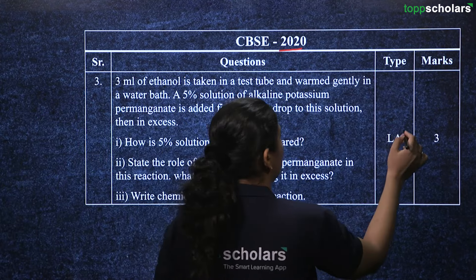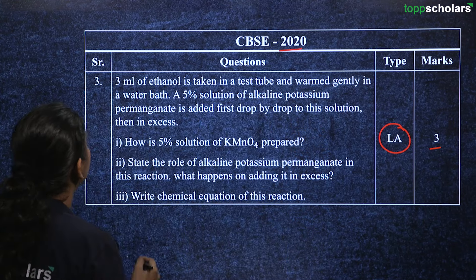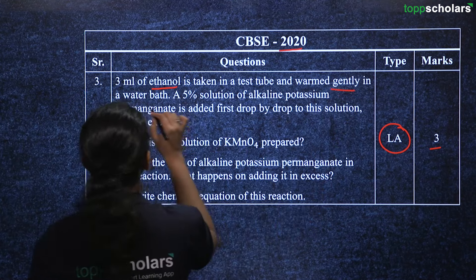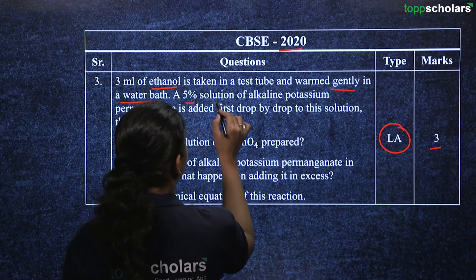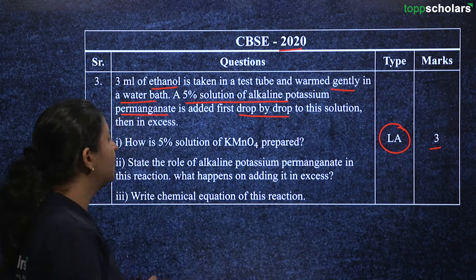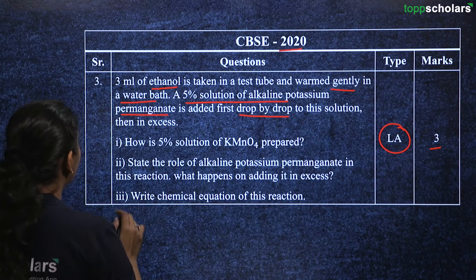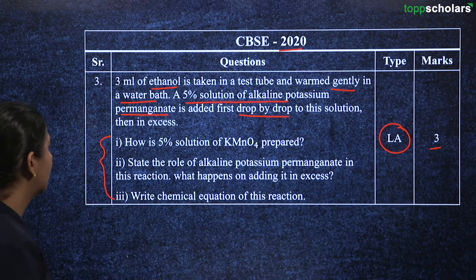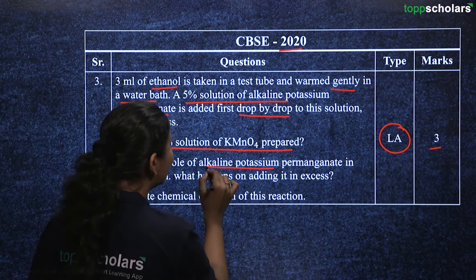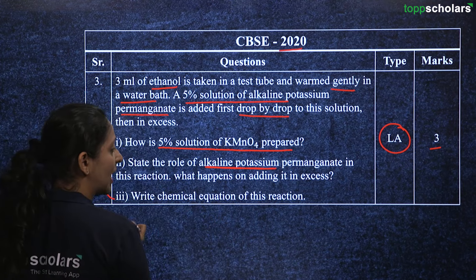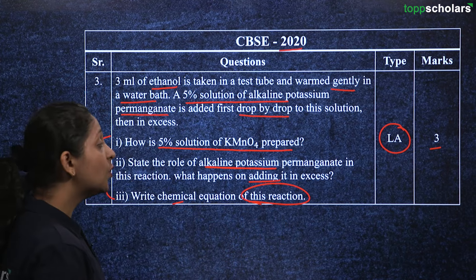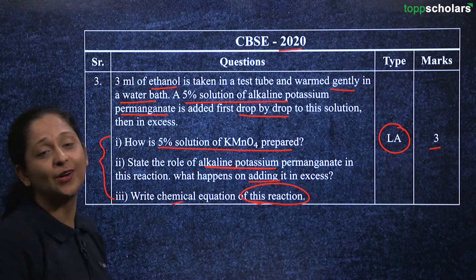From the same year, there is a three mark long answer question. 3 ml of ethanol is taken in a test tube and warmed gently in a water bath. A 5% solution of alkaline potassium permanganate (KMnO4) is added first drop by drop and then in excess. You must answer: how is the 5% KMnO4 solution prepared, what is the role of alkaline KMnO4 in this reaction, what happens when added in excess, and write the chemical equation.